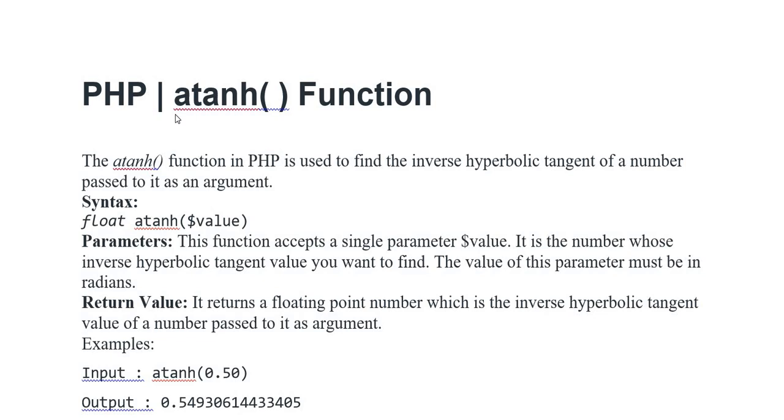The atanh function in PHP is used to find the inverse hyperbolic tangent of a number passed to it as an argument.